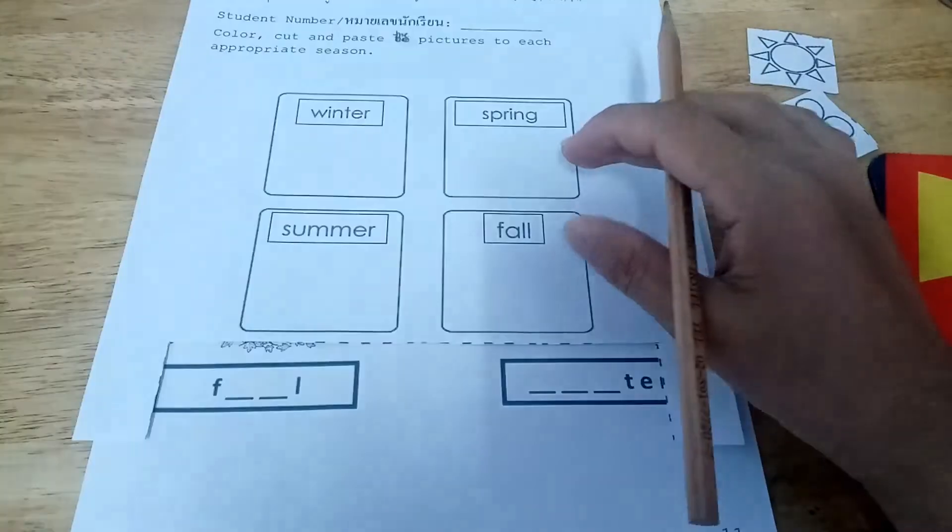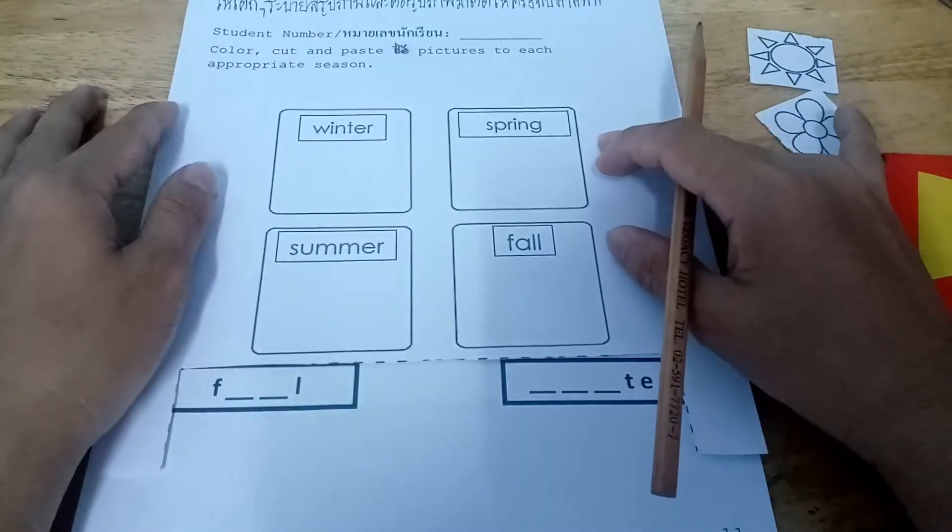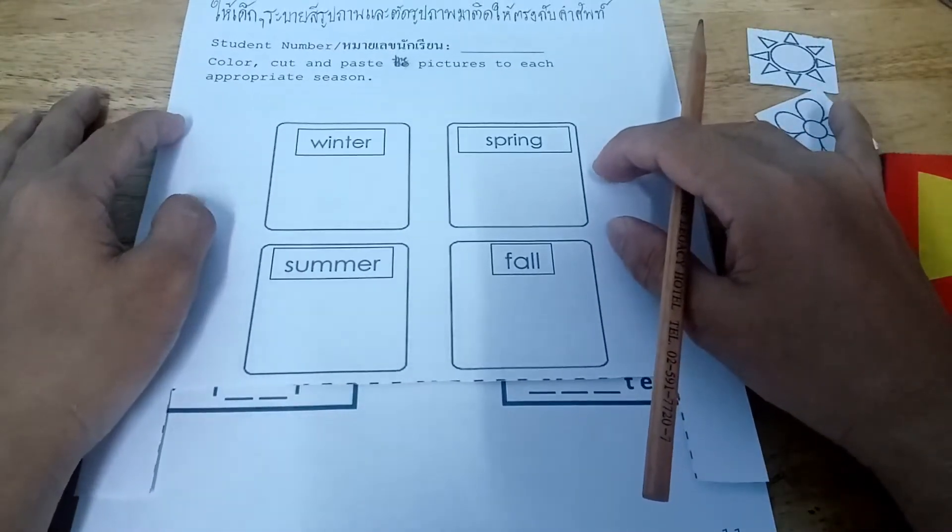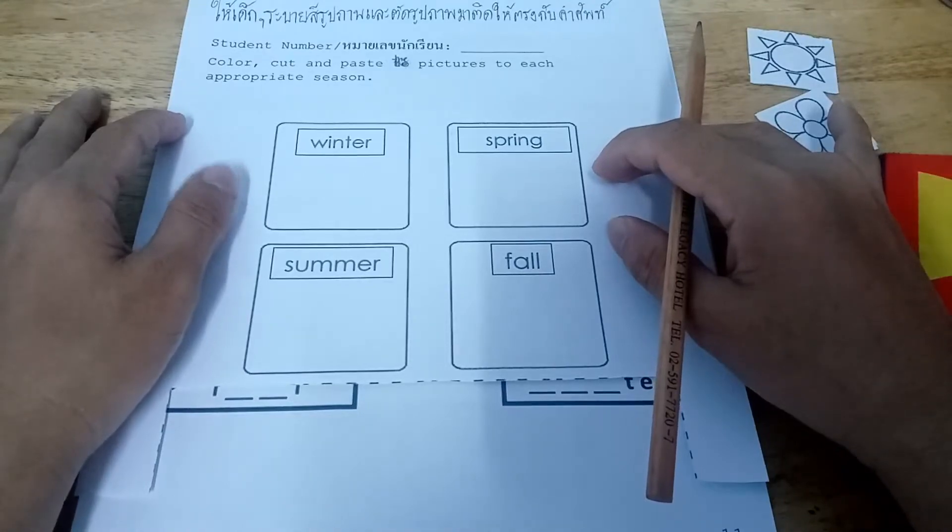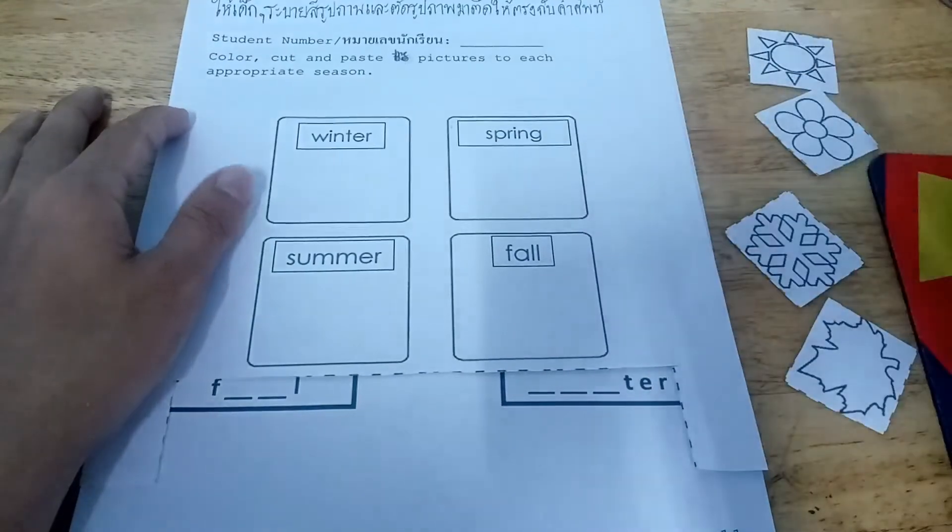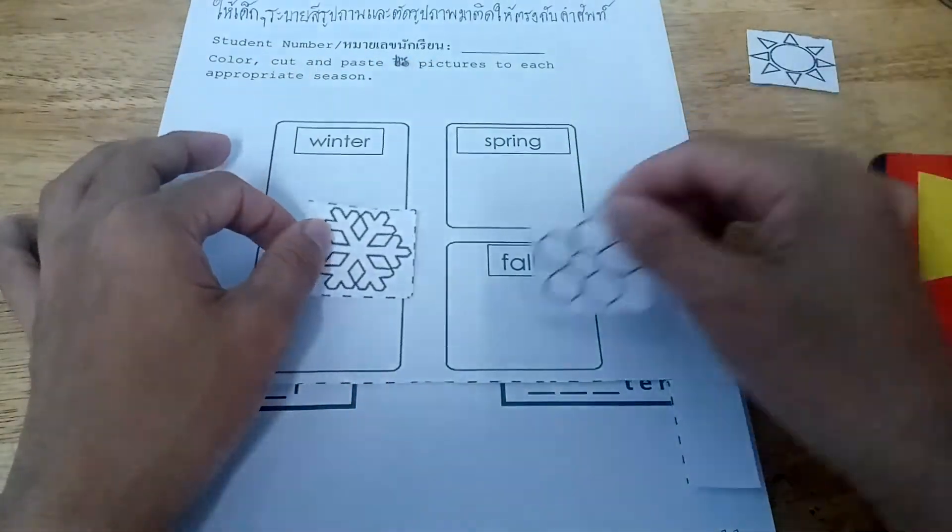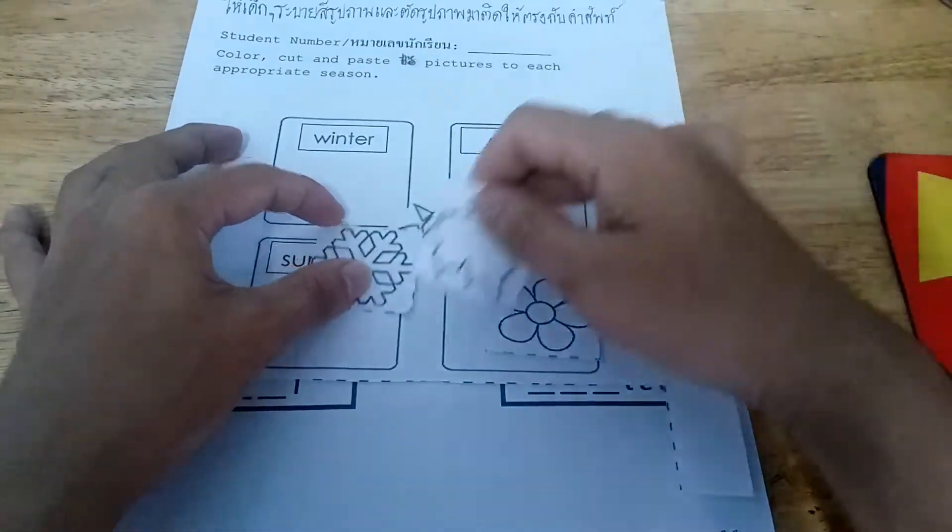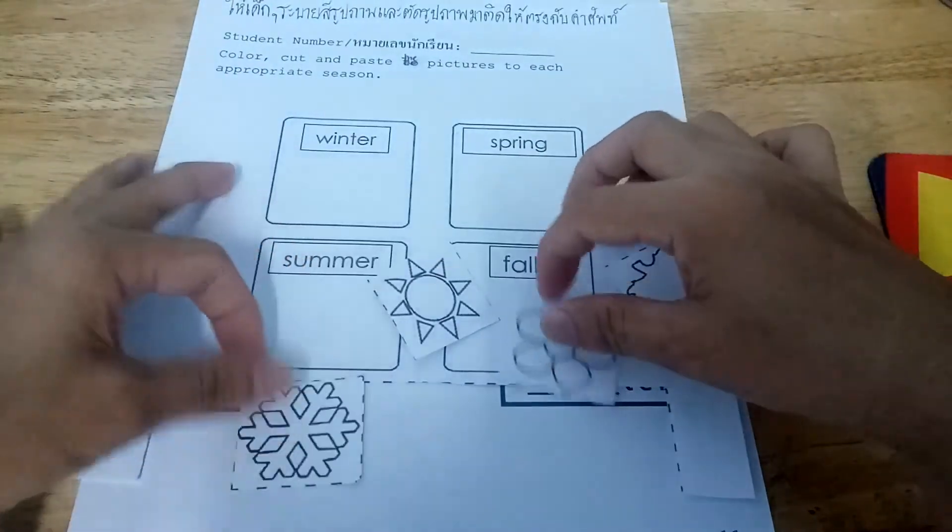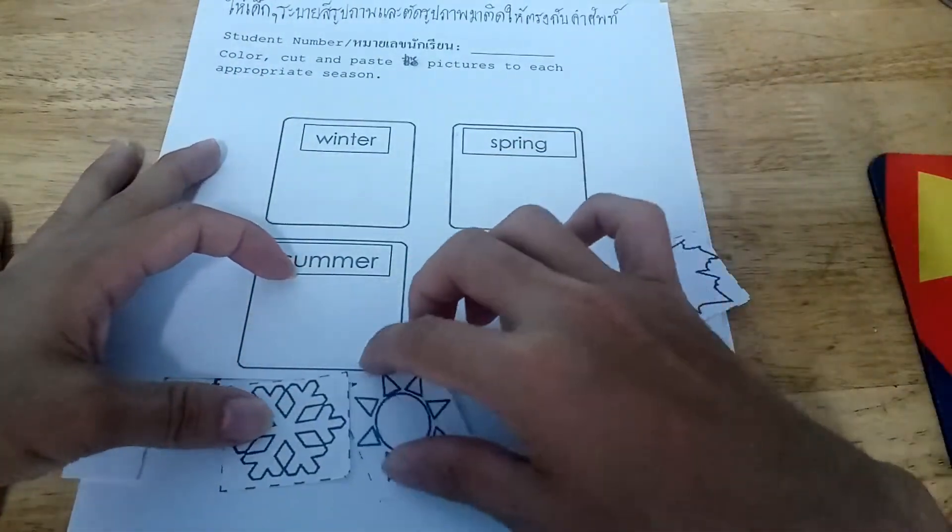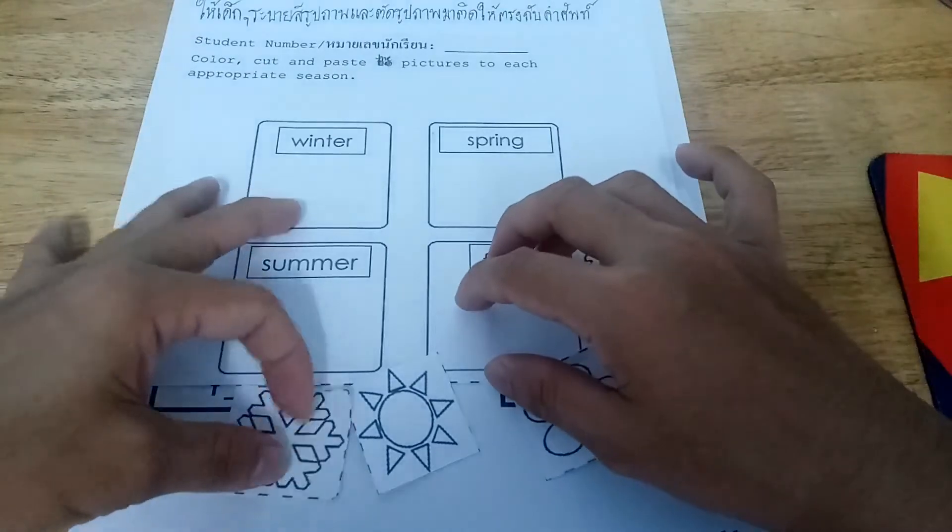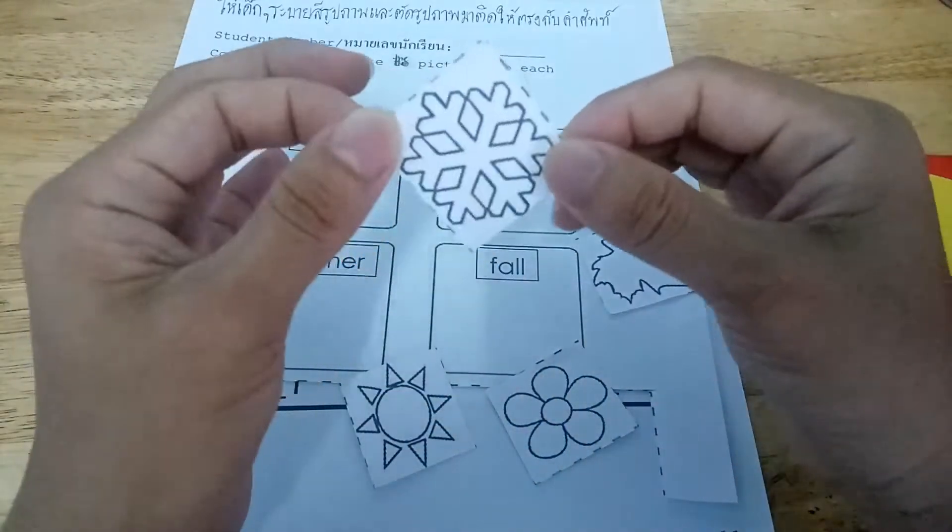Okay, let's move on. We have here this color, cut, and paste the pictures to each appropriate season. Teacher already cut the pictures. Now, we have different pictures, and you're going to paste it accordingly. What do you think this picture?